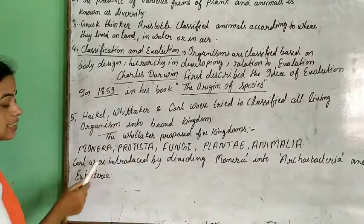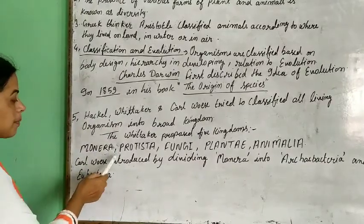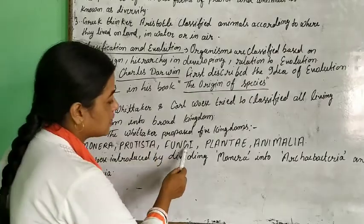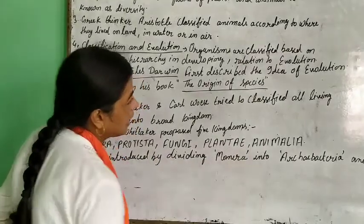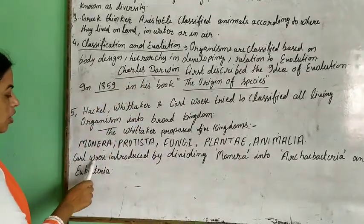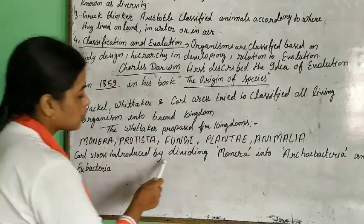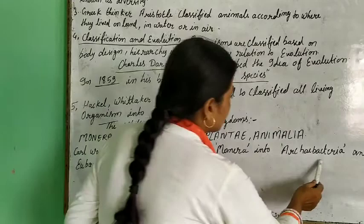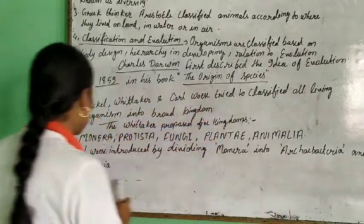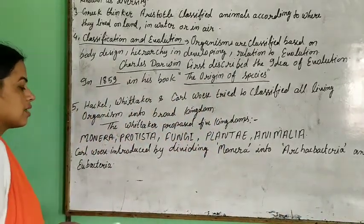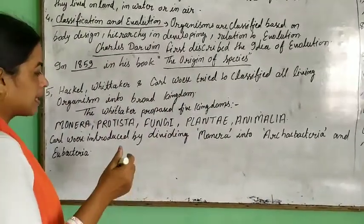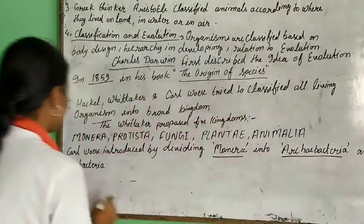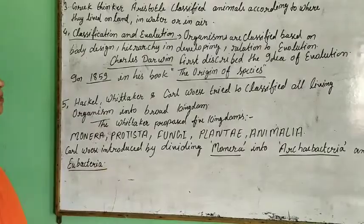The five kingdoms are: first, Monera — which is the largest kingdom; then Protista, then Fungi, Plantae, and Animalia. Monera was further divided by Woese into Archaebacteria and Eubacteria.